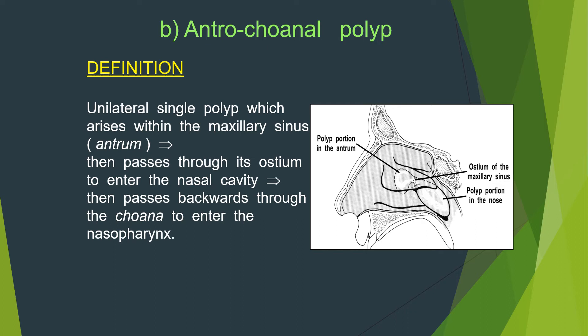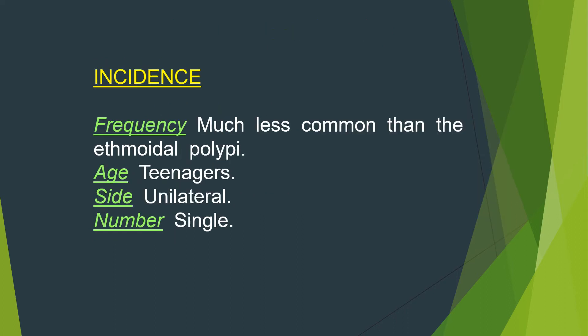Antrochoanal polyp is a unilateral single polyp which arises within the maxillary sinus antrum, then passes through its ostium to enter the nasal cavity, then passes backward through the choana to enter the nasopharynx. It is less common than ethmoidal polypi and usually happens in teenage years; it is unilateral and single.